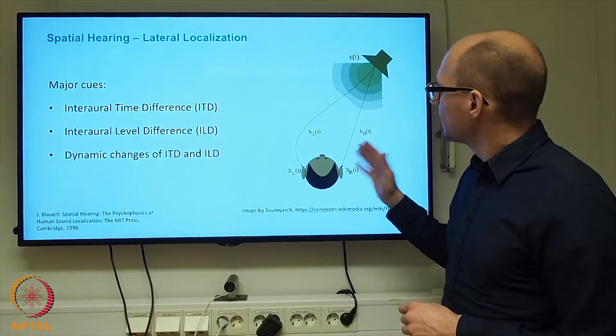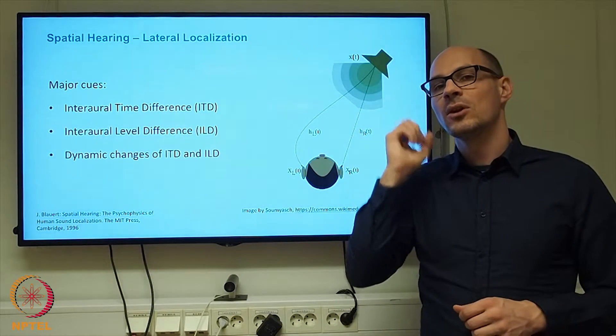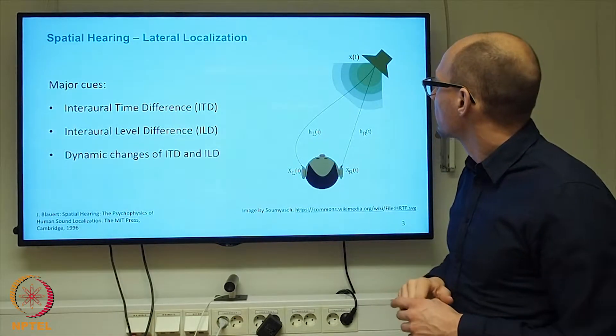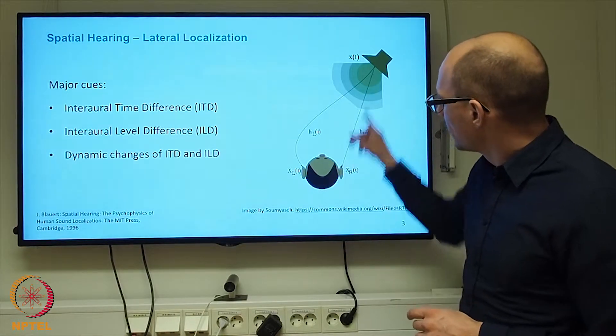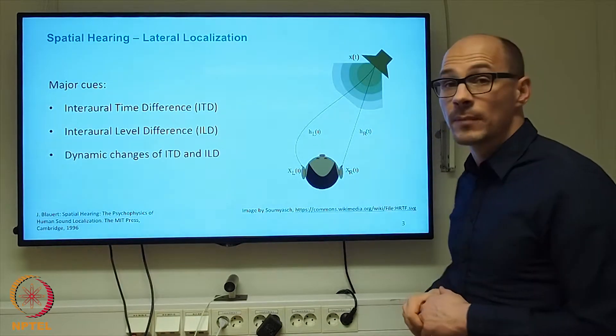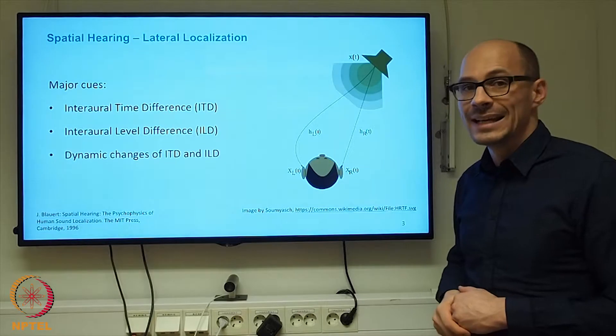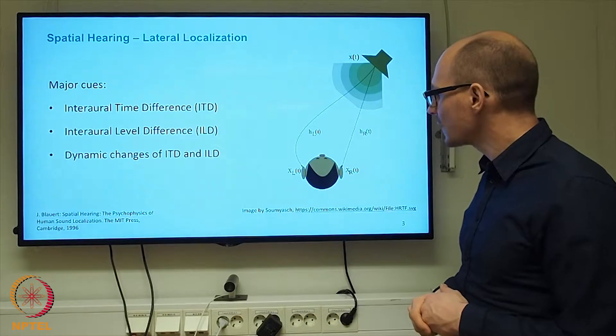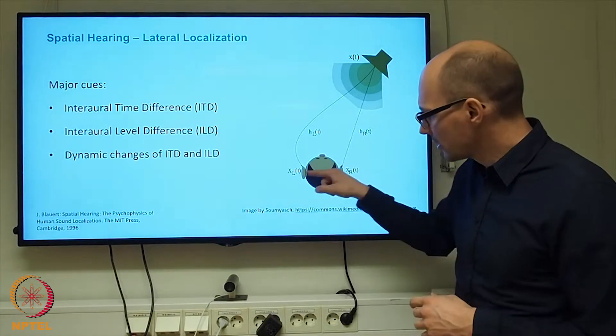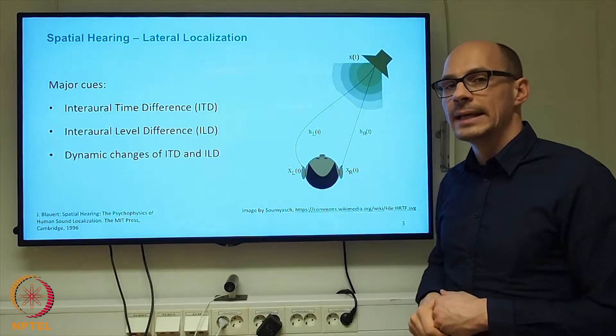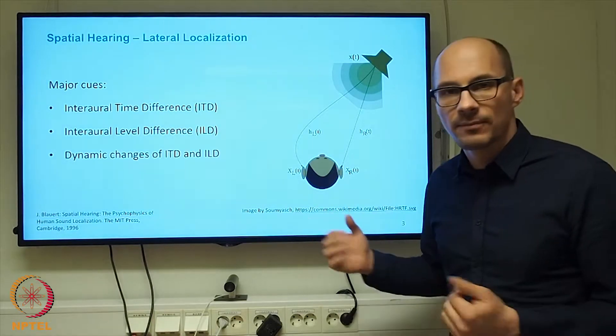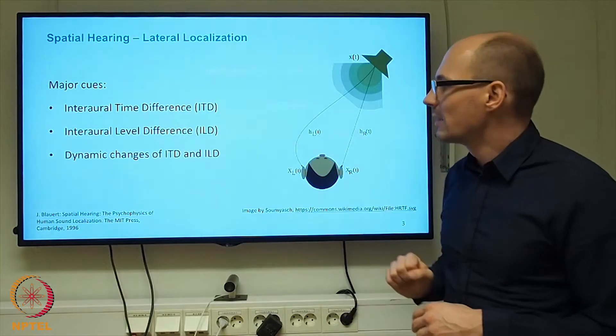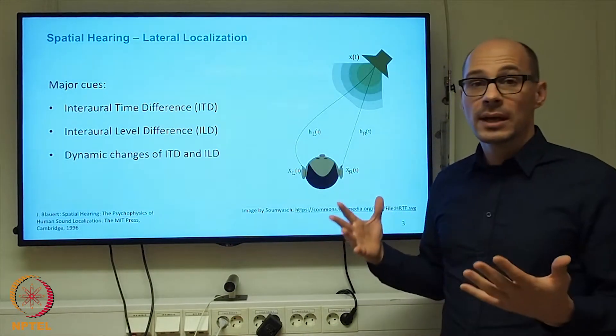Similarly, in the same situation, the head will also occlude the sound that reaches the contralateral ear, which would be the left one in this case. The ear that is directly illuminated by the sound source is called ipsilateral. The head is basically in the way so that it will attenuate the sound field that reaches the contralateral ear. It will primarily do this for higher frequencies.